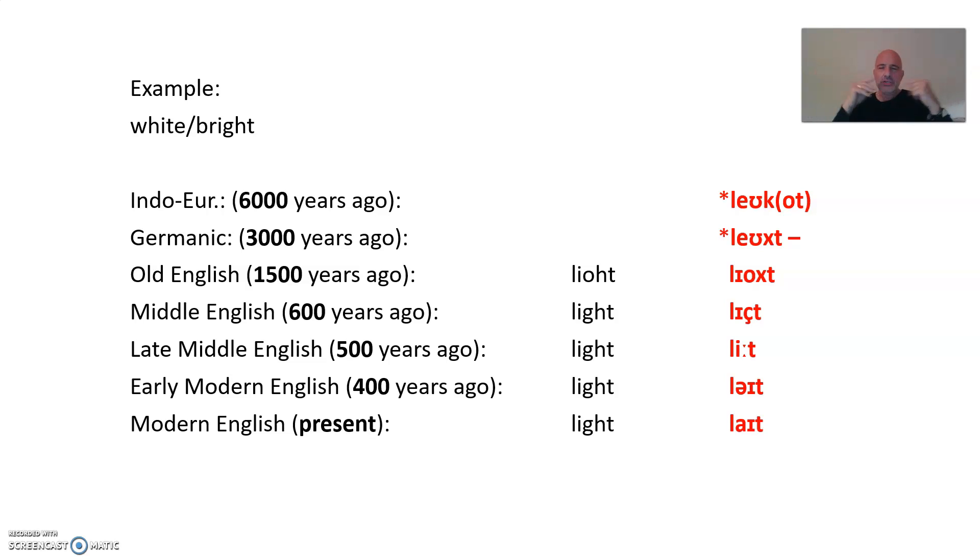And since English is a Germanic language, it then came into English through Germanic, through West Germanic into English. And this is the first time this word was written down in Old English times, starting something like 1,500 years ago. There's a word called leoht. So this leuht developed into leoht, and this is Old English.